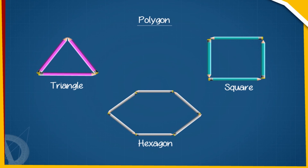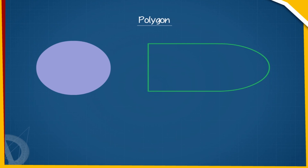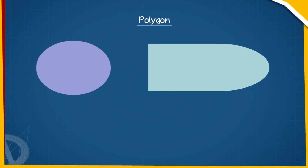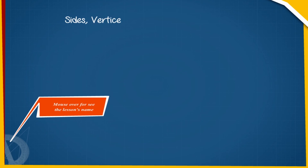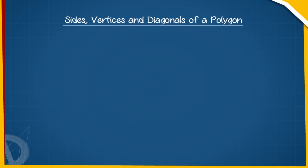Shapes with curves, like a circle, are known as curvilinear figures. Observe the following curvilinear figures. Now let us look at the sides, vertices, and diagonals of a polygon.